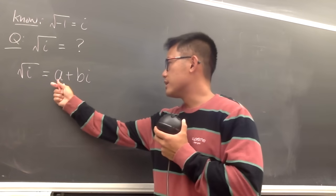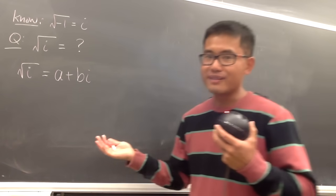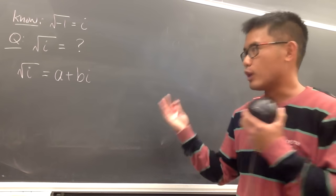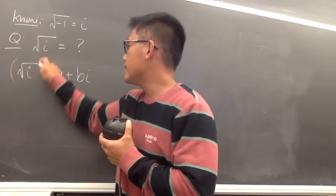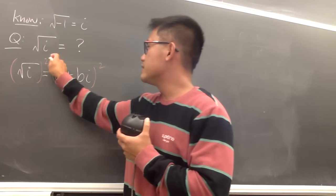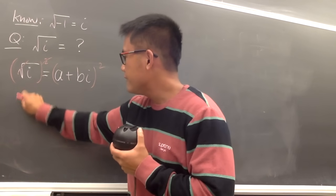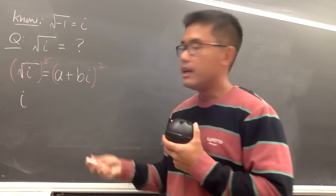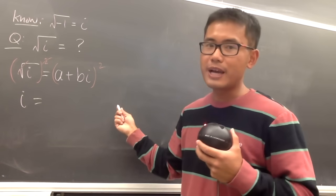If we can find out what the values of a and b are, then we are done. So we'll do this the algebraic way — just go ahead and square both sides, so the square root cancels. On the left-hand side we'll have i, and on the right-hand side we multiply out (a + bi)².